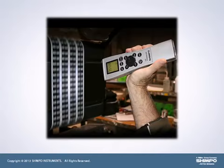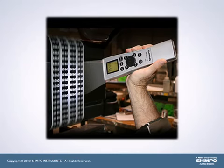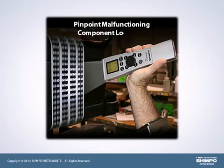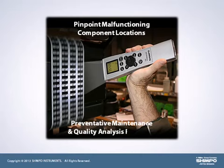When the stroboscope's flash rate is synced with the speed of the equipment, the illusion of slowed or stopped motion is created, allowing further analysis of proper system operation. This phenomenon simplifies pinpointing the location of malfunctioning components, aiding technicians with their preventative maintenance and quality analysis programs.